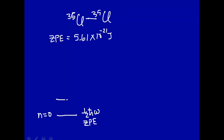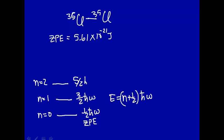The next energy level for n equal 1 is 3 halves h bar omega. Because the energy goes as the quantum number plus 1 half h bar omega. Then the n equal 2 level, we have 5 halves h bar omega and so on.